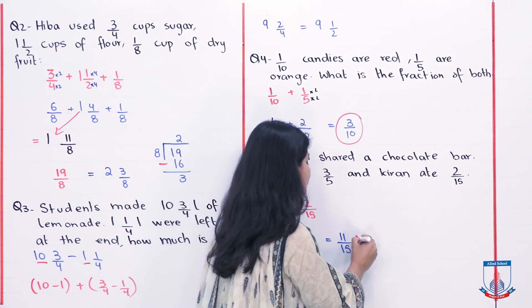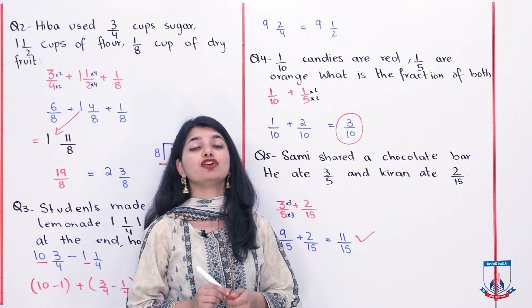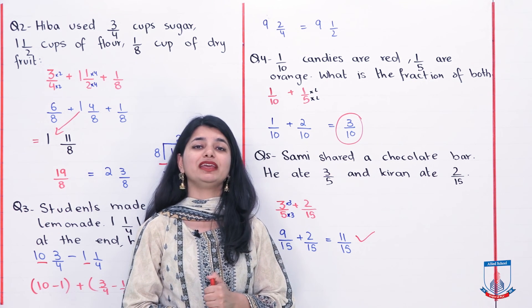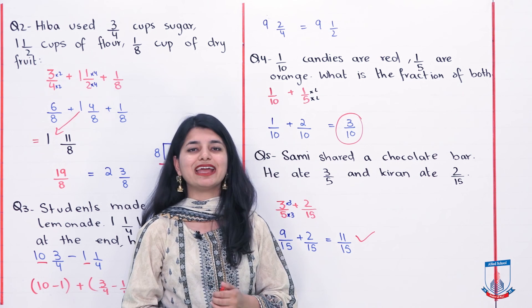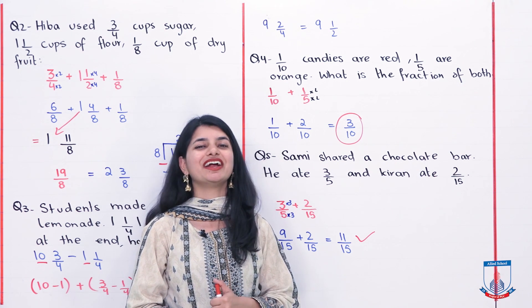So altogether they ate 11 by 15 portions of the chocolate bar. With that students our word problems are all finished. After exercise 3a, next lecture we will talk about multiplication of fractions. I'll see you there then, Allah hafiz.